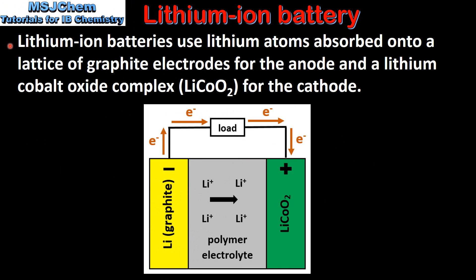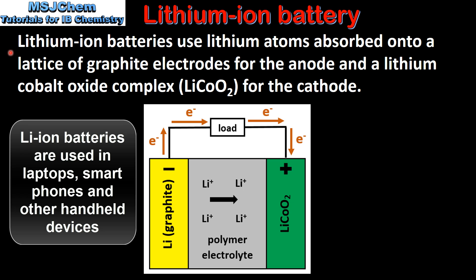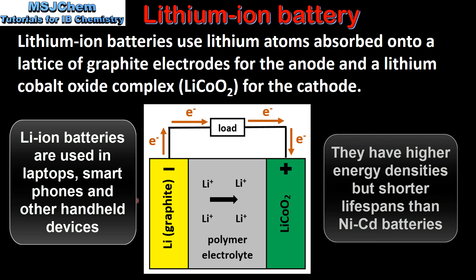Finally we look at the lithium ion battery. Lithium ion batteries use lithium atoms absorbed onto a lattice of graphite electrodes for the anode, and a lithium cobalt oxide complex for the cathode. Here we have a diagram of a lithium ion battery. Lithium ions pass from the anode to the cathode in the polymer electrolyte. Electrons pass in the external circuit from the anode to the cathode.